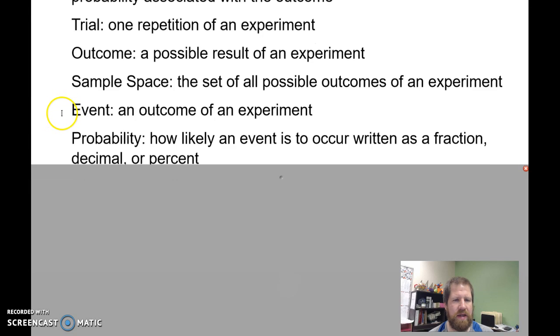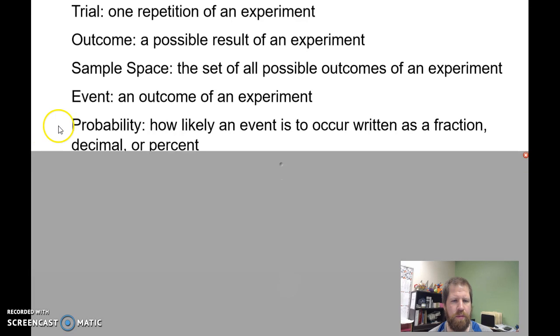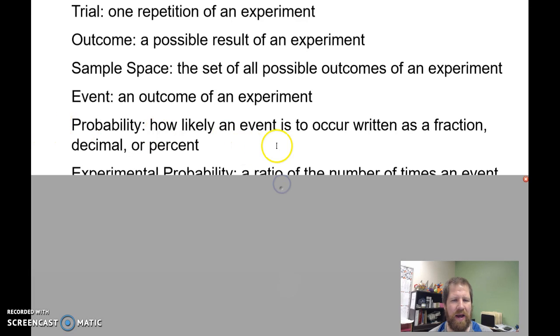An event is an outcome of the experiment. The probability is how likely something's going to occur, and it's either going to be a fraction or decimal between 0 and 1, or it's going to be a percent, up to 100.